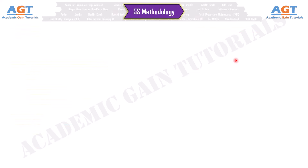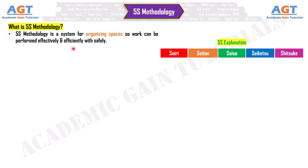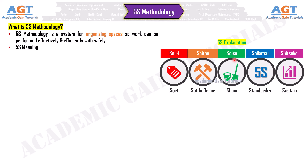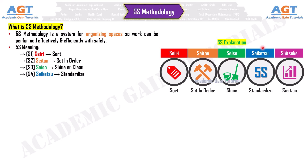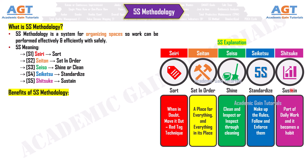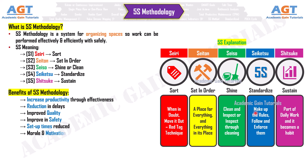Number 24: 5S Methodology. 5S Methodology is a system for organizing spaces so work can be performed effectively, efficiently, and safely. The five S's are: S1 — Seiri, meaning to sort; S2 — Seiton, meaning to set in order; S3 — Seiso, meaning to shine or clean; S4 — Seiketsu, meaning to standardize; S5 — Shitsuke, meaning to sustain. Benefits: 5S increases productivity through effectiveness, reduction in delays, improved quality, improved safety, reduced setup times, increased morale and motivation, less stress for operators, and a safer work environment.